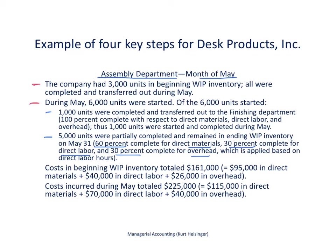We also have cost information at the very bottom here. We have costs that were in beginning work in process of $161,000, and then we had costs incurred during May in the assembly department of $225,000. These costs — carried over into May from April or incurred in May — need to be divvied out in step four: for those goods that have been completed and moved out of this department, and for those goods that are still in this department.